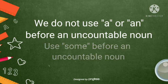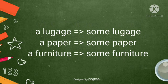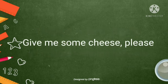Use some before an uncountable noun. A luggage, some luggage. A paper, some paper. A furniture, some furniture. For example, give me some cheese, please.